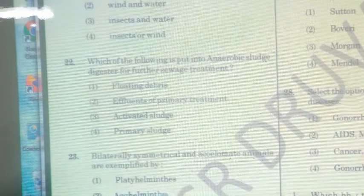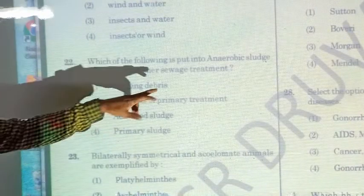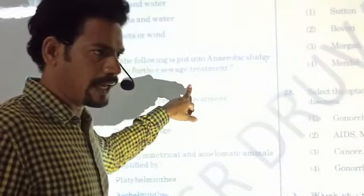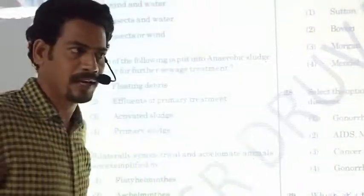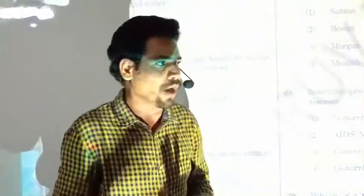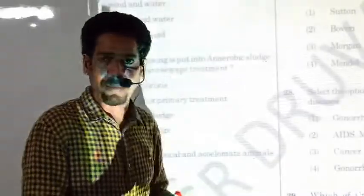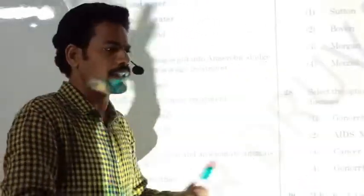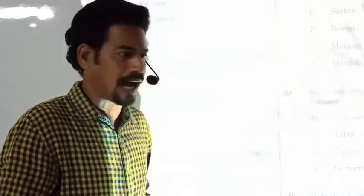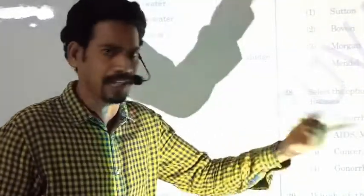Question twenty-two: in sewage treatment, the floc — bacteria and fungi that settle — is sent into the anaerobic sludge digester. Anaerobes act upon aerobic bacteria and fungi present in the sludge, and through their metabolic conflict, the waste becomes less polluted. The answer is about activated sludge in the anaerobic sludge digester.